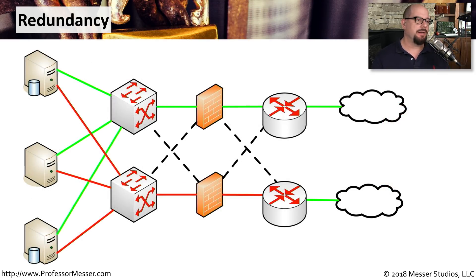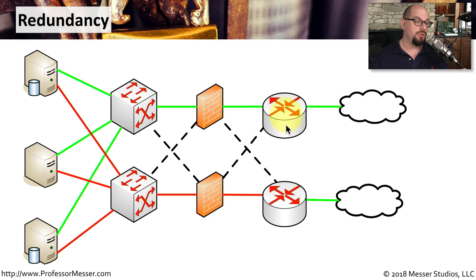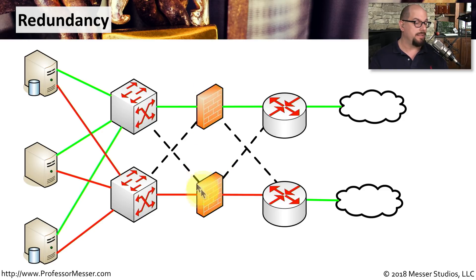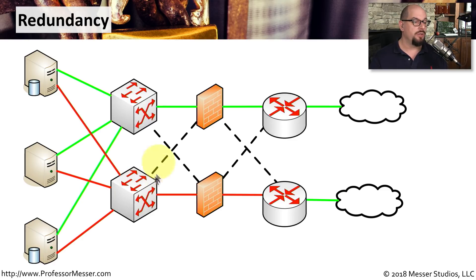Visually, here's how this redundancy might look. You might have multiple links to the internet, possibly using different internet providers. Those connect through two different routers — one set as active and one as standby. Behind those routers, you may have multiple firewalls, one active and one on standby, and then redundant internal core switches. If one switch fails, all of your redundant servers will fail over to the backup systems so you're always up and running.